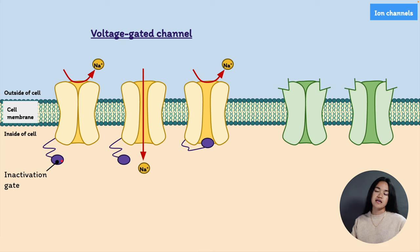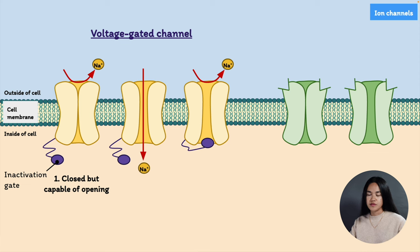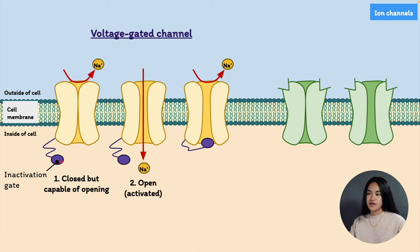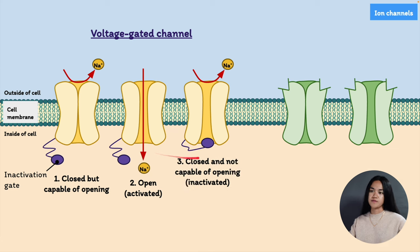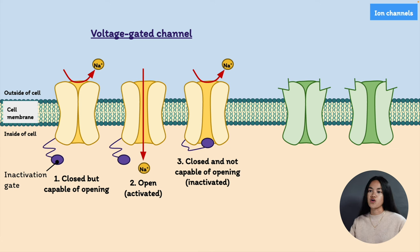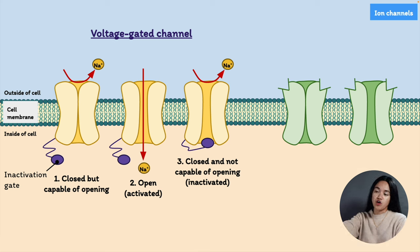With voltage-gated channels, looking at sodium channels specifically, these have two gates: an activation gate and an inactivation gate. The inactivation gate can be described as a ball-and-chain-like structure. These channels have three states: first, closed but capable of opening (the inactivation gate is open with the ball hanging free); second, completely open and activated (both gates are open); and third, closed and not capable of opening — the inactivated state. Some of these channels will be stimulated to open by depolarization or hyperpolarization — any changes in the membrane potential determine whether the channels open or close.